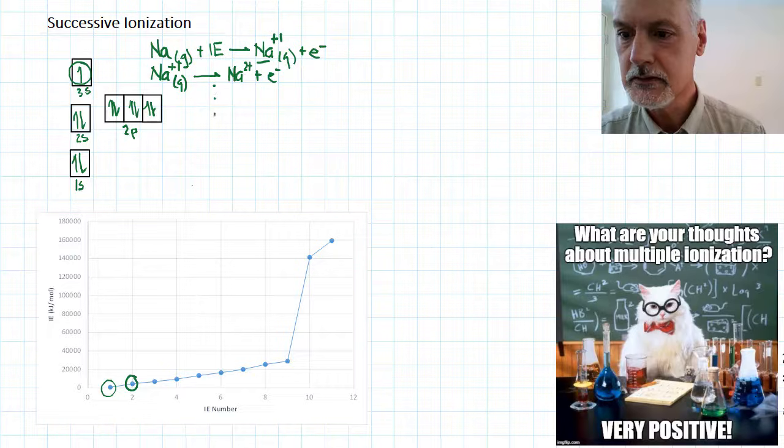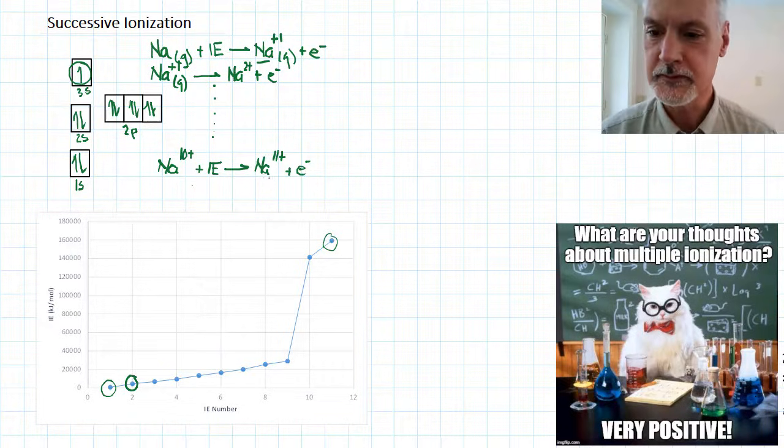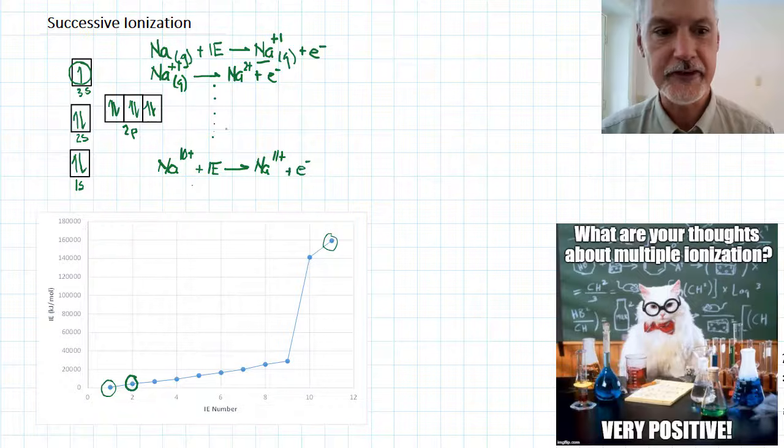We can continue to do this until we've removed all of sodium's electrons, with the last one being sodium with a 10 plus charge. We add the final bit of ionization energy to remove that particular electron. We would now end up with sodium with an 11 plus charge and an electron. We can't go any further because we've removed all of the electrons. This is what I call successive ionization.